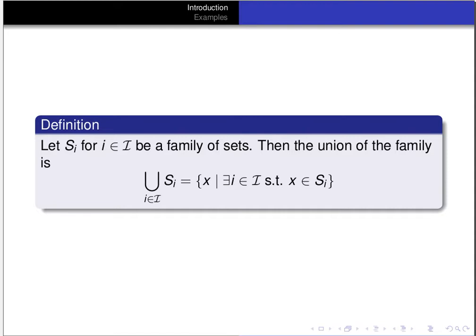Regardless, if you have a family of sets S_i, the union of the family consists of all elements x such that x is in some S_i. So in order to be in the union, you have to be in at least one of the S_i's. For x to be in the union, there must exist some element i in the index set capital I such that x is an element of the set S_i.